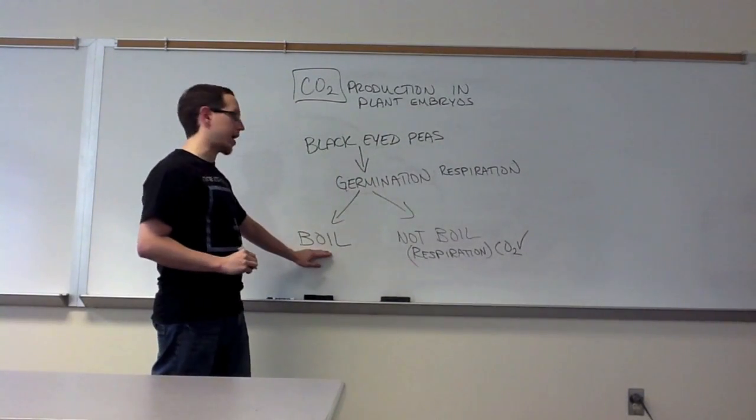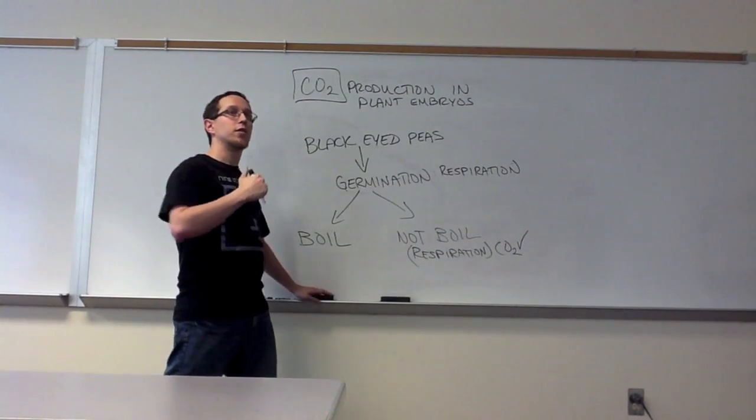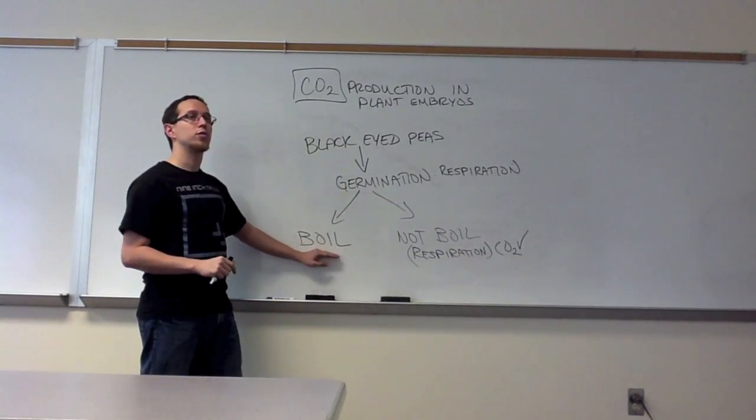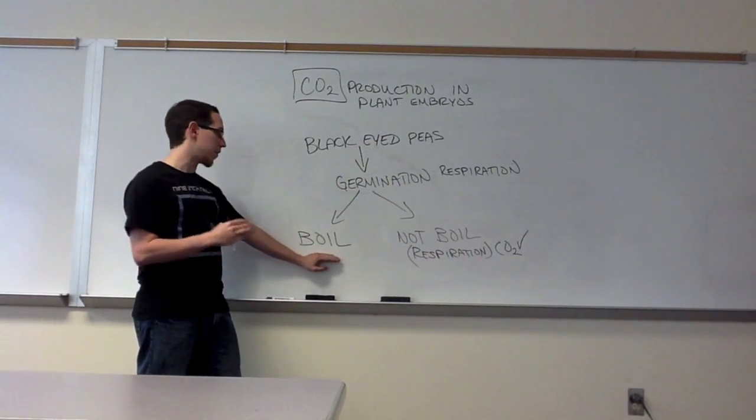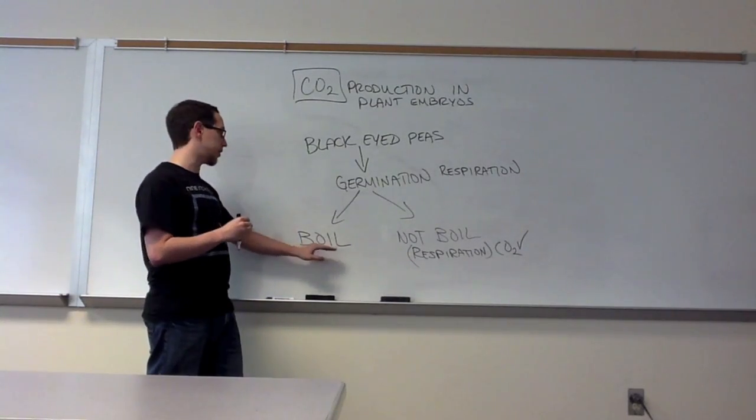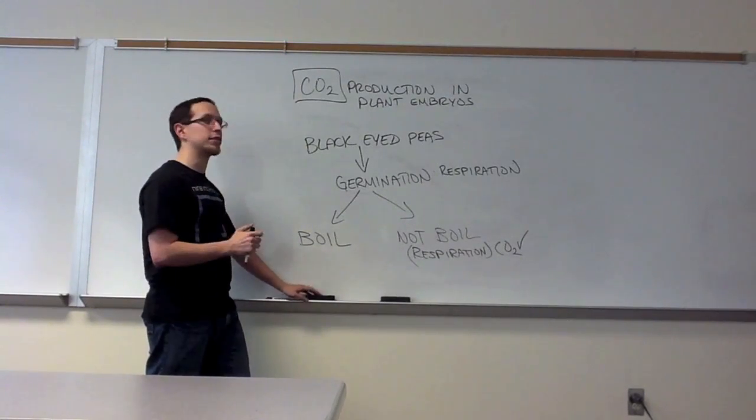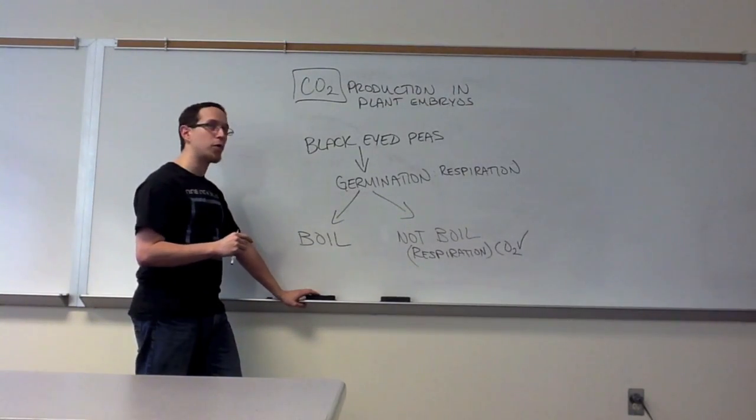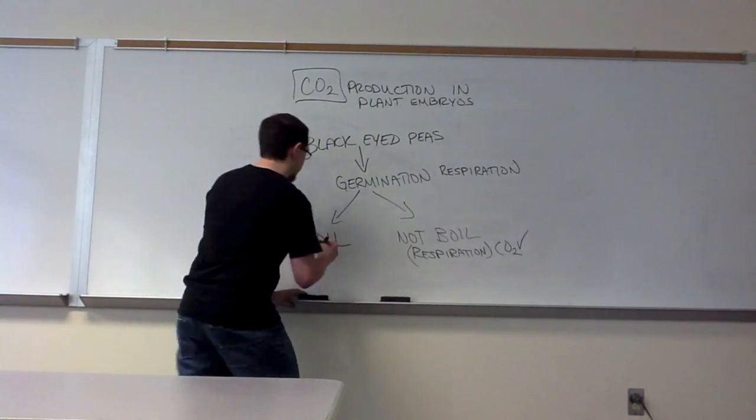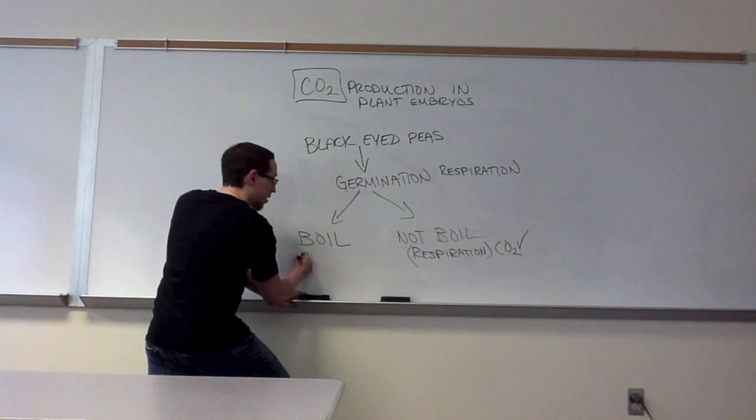These, on the other hand, in theory, are dead at this point. One of the reasons why, if you think back to the enzyme unit, is you heated them up to a boiling temperature. Therefore, you most likely denatured many of the proteins that these peas would have needed to utilize. You probably also disrupted some of the cellular membranes and cell walls with the boiling, but you also denatured those proteins that these peas are going to need to use to perform respiration and any of their other metabolic processes.